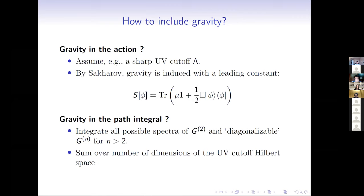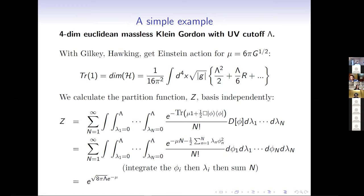For gravity in the path integral, we integrate over all possible spectra of our propagator and all diagonalizable vertices G_n. Additionally, we must sum over the number of dimensions of the UV-cutoff Hilbert space of fields — that is, sum over all possible numbers of eigenvalues in the spectrum. So we integrate over the eigenvalue values and sum over how many eigenvalues there are.